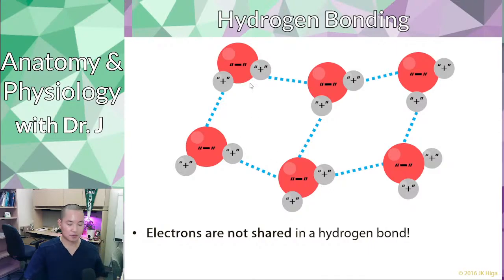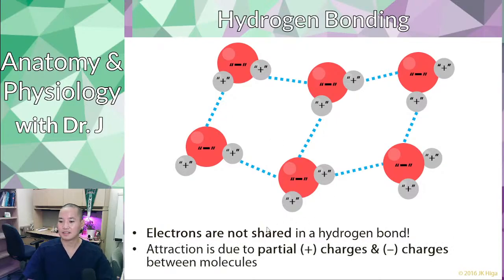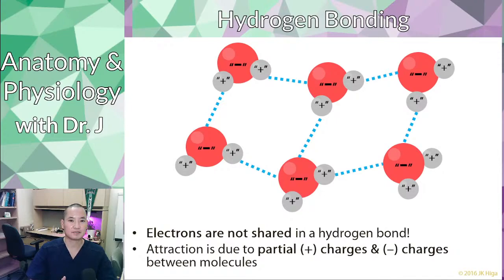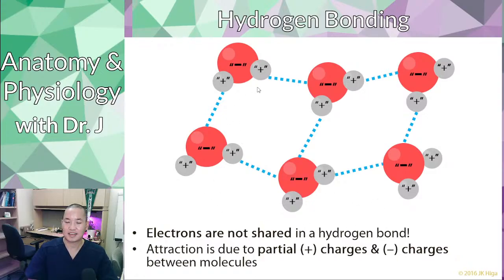You have polar covalent bonds within a water molecule, but between water molecules you have hydrogen bonding. So it's attraction due to partial negative and positive charges between molecules — versus an ionic bond where you have a full positive or negative charge. This slight positive and negative is due to the unequal sharing of electrons in polar covalent bonds.